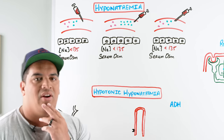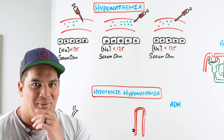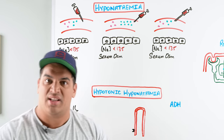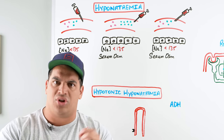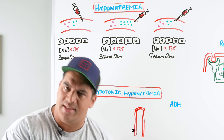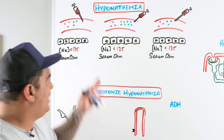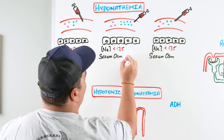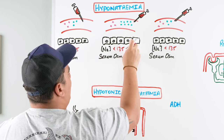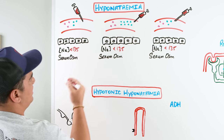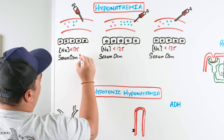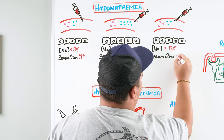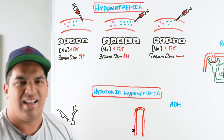If we have a sodium less than 135, the first thing we want to figure out is: is it real or is it a pseudo-hyponatremia? One of the first tests I like to check is a serum osmolality. Sodium controls a degree of tonicity in the blood, so if sodium is low, the tonicity of the blood would be low. Normal serum osmolality is between 280 to 295. When you order it, you can get results that are high, low, or normal.